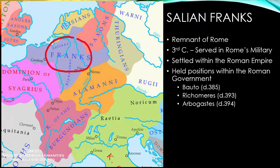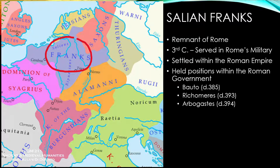A number of Frankish figures held significant positions within the Roman government — figures like Flavius Bauto, Flavius Richomeres, and Arbogastes held positions such as Magister Militum and Consul. These were men who led Roman troops into battle against other tribes like the Thuringian Goths and fought against usurpers like Magnus Maximus from Britain. These were truly Romanized Franks.